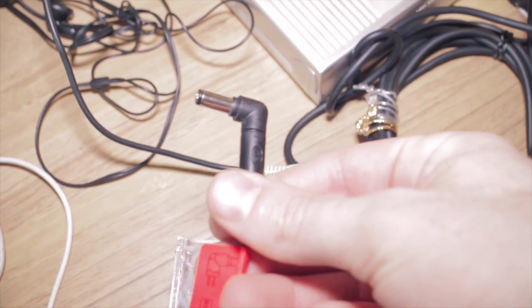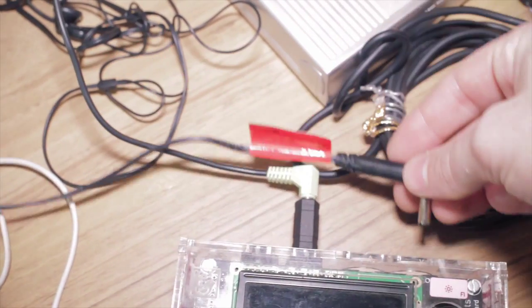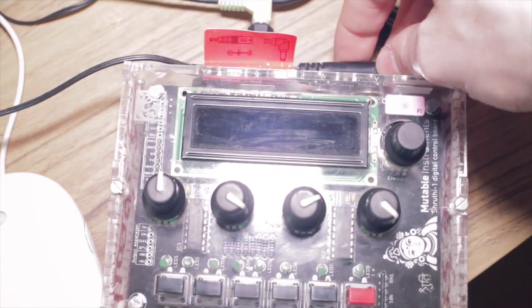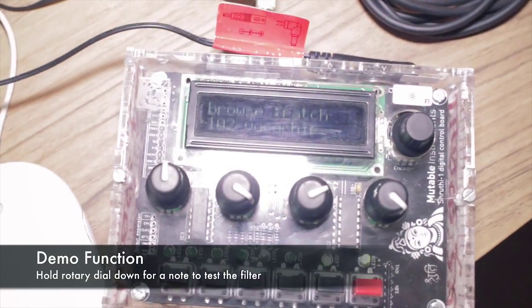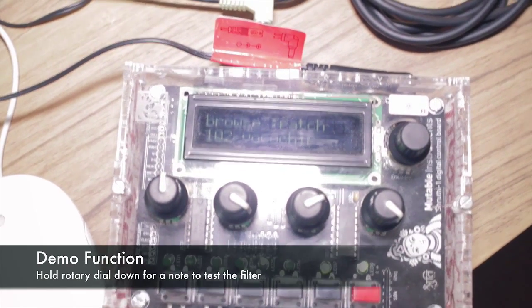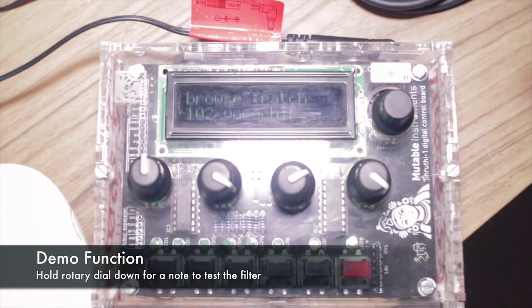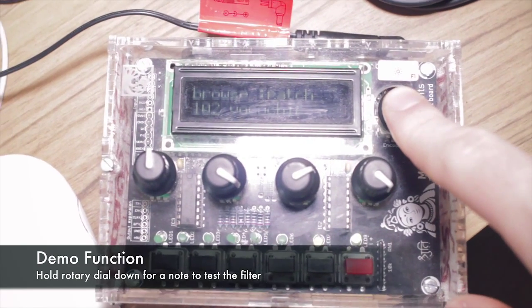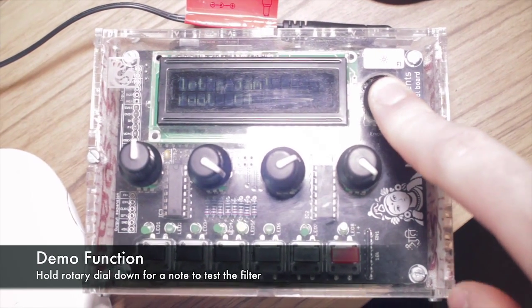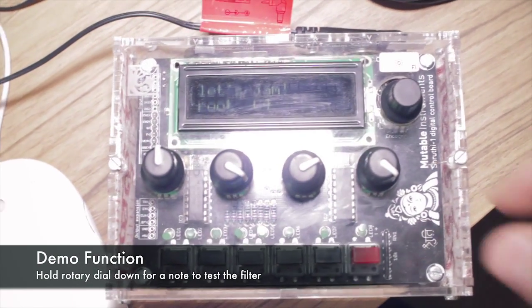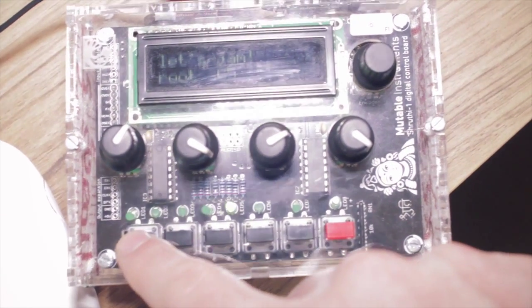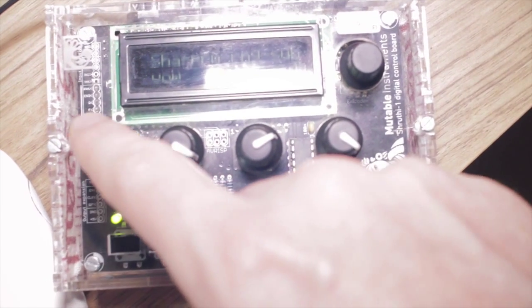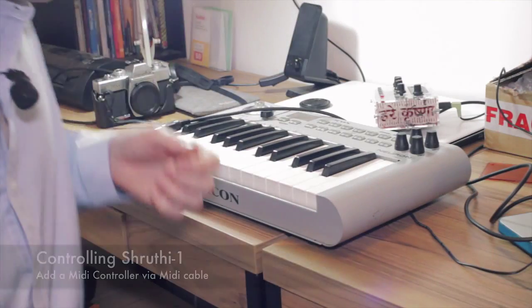What you're going to need is one of these 9V power supplies. This doesn't come with the Shruti, so you're going to get that yourself. Plug that in. Now, we can test out if all the soldering worked by just pressing the demo function and holding that down. Now you're going to get a note. You can change what that note is. You can go into your filter selection and control different parts of the filter.